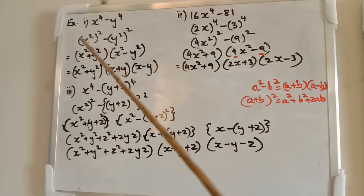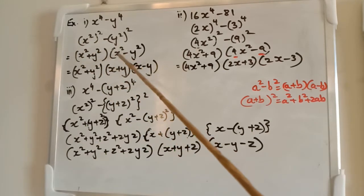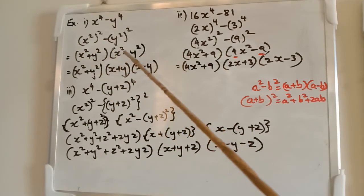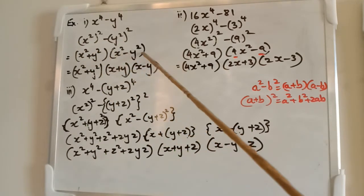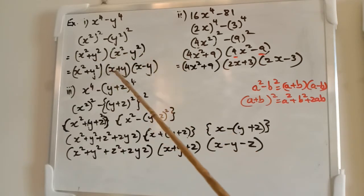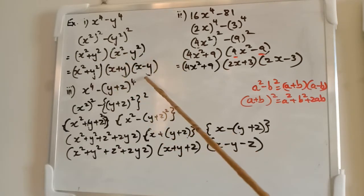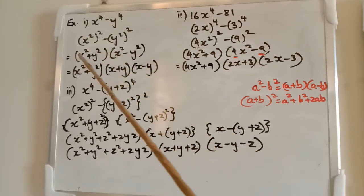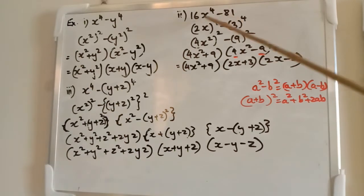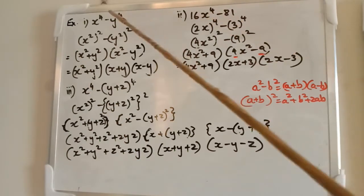So all of them can be presented as difference of squares if they are even number of powers. We will get x square plus y square into x square minus y square. What is x square minus y square? It is x plus y into x minus y. And keep x square plus y square within the bracket.